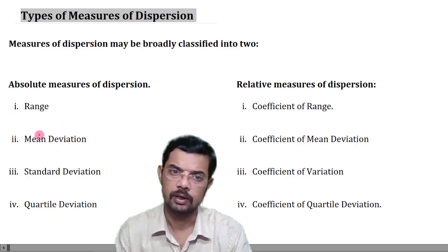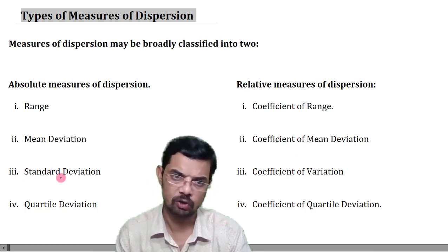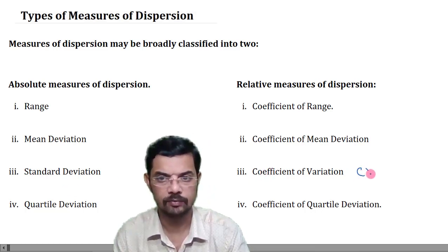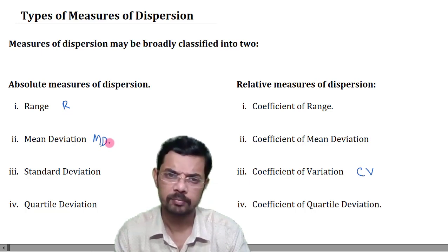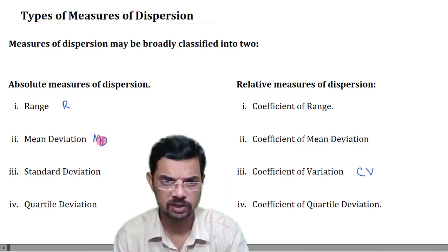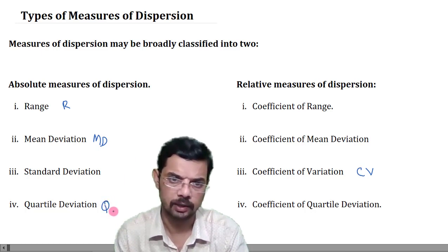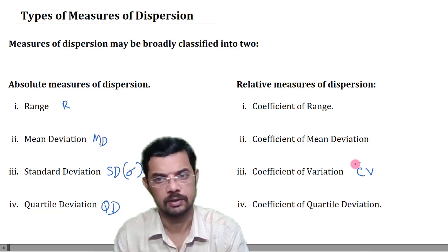The relative measure corresponding to mean deviation is the coefficient of mean deviation. The relative measure corresponding to standard deviation is the coefficient of variation, also denoted CV. Range is denoted R, mean deviation is MD about some mean or median, standard deviation is SD or sigma, quartile deviation is QD, and coefficient of variation is CV. Each of these measures will be discussed in detail in separate videos.